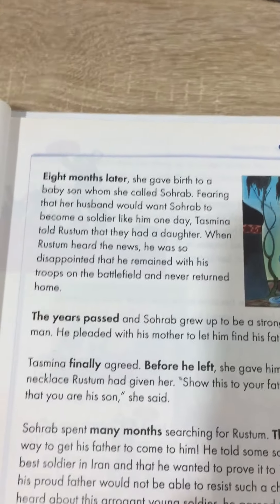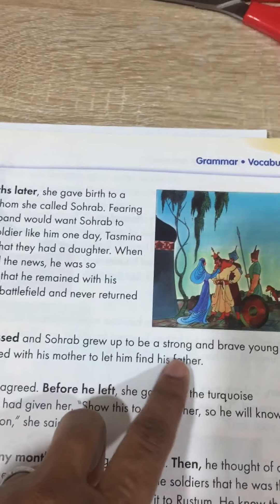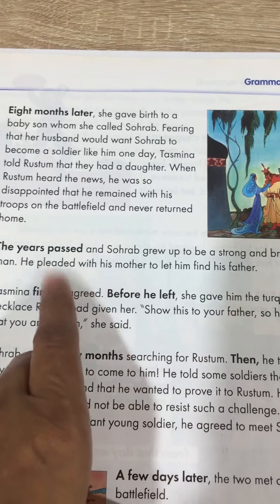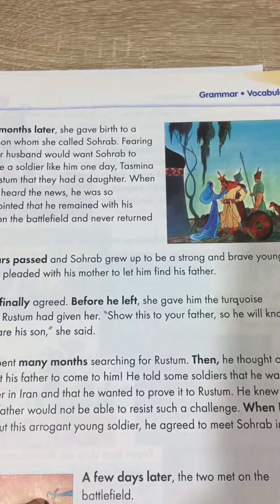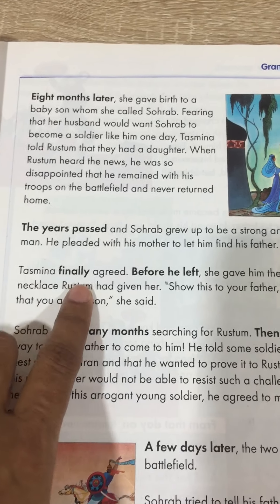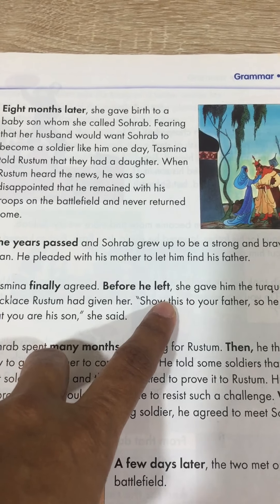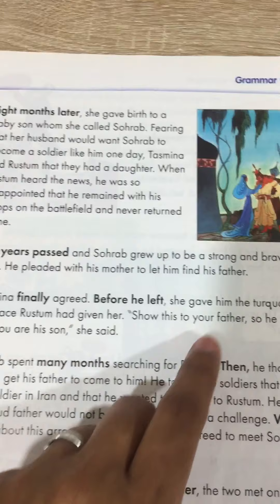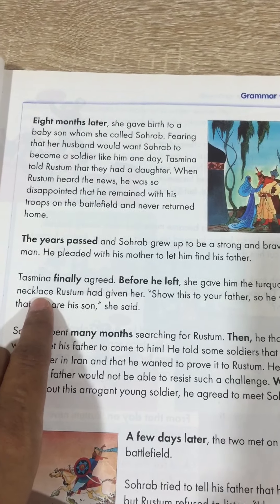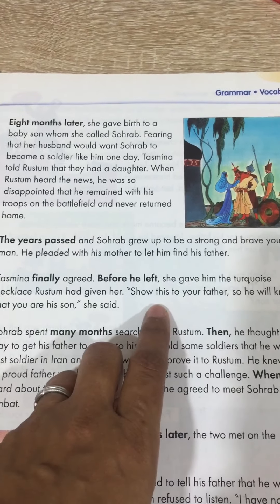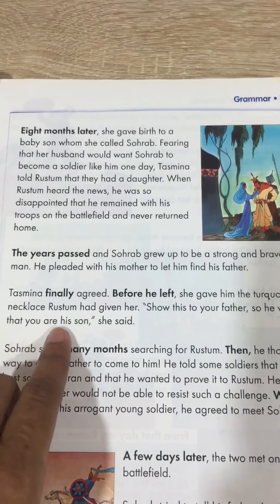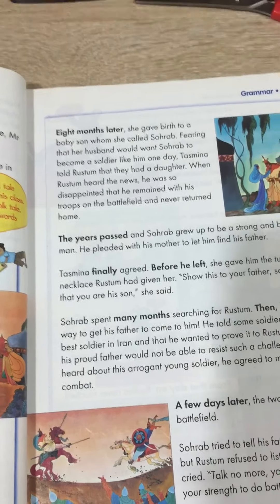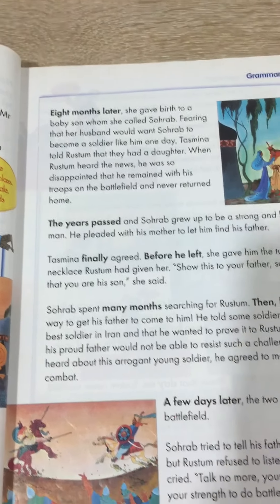The years passed. Sahrab grew up to be a strong and brave young man. He pleaded with his mother to let him find his father — he begged his mother, 'Please let me go and see my father.' Tasminah finally agreed. Before he left, she gave him the turquoise necklace which Sahrab's father Rustam had given her. She said, 'Show this to your father so he will know that you are his son.' So that necklace is proof — to prove to Rustam that Tasminah sent him and that Sahrab is her son.